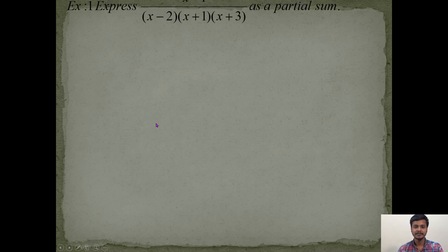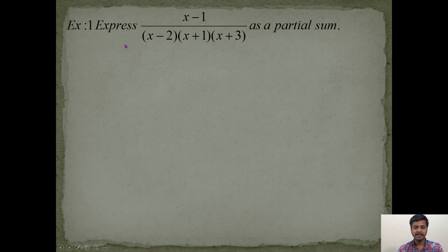Now let's take an example based on the types. The first type is linear, so the first example is: express (x − 1) / [(x − 2)(x + 1)(x + 3)] as a partial sum.